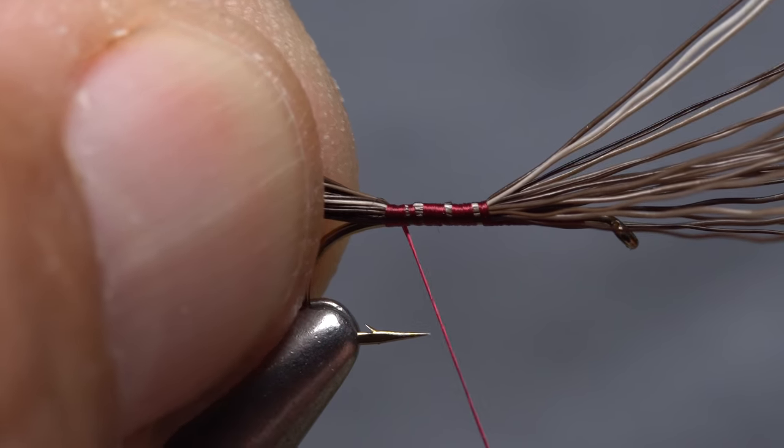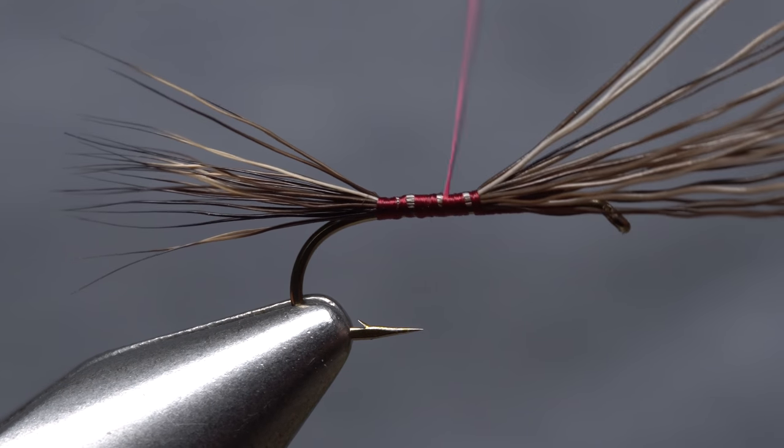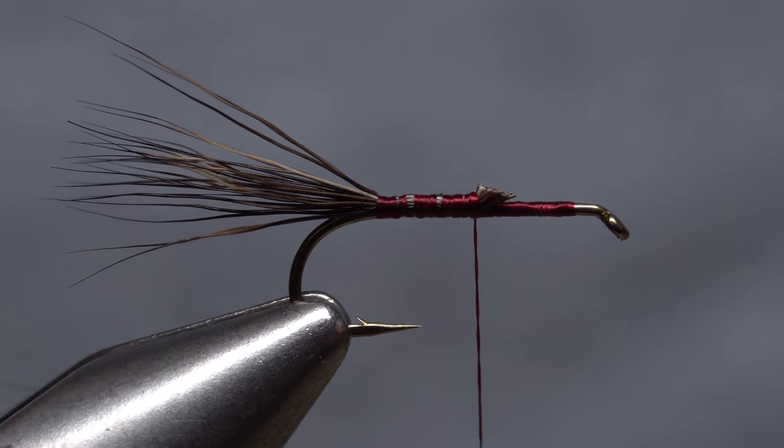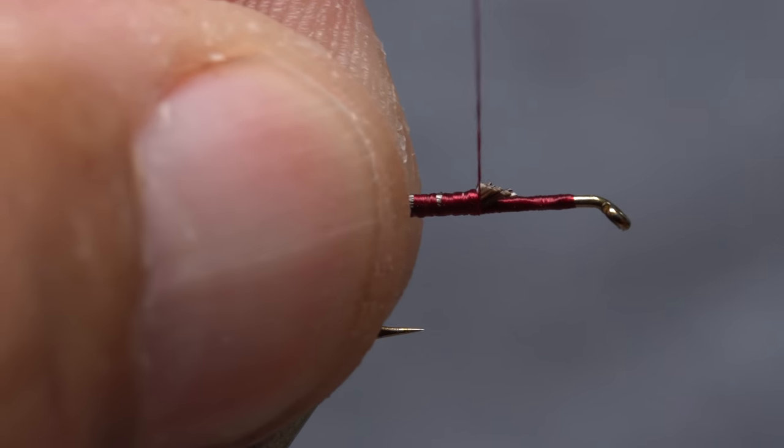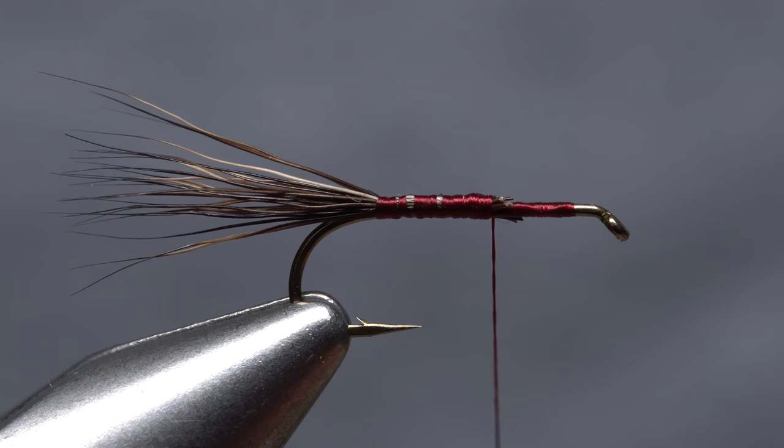It's okay, in fact preferable, if it flares just a little bit. Wrap forward with your tying thread up the hook shank to about its midway point, then pull the butt ends of the moose hair up and snip them off close. Take a few more wraps of tying thread to cover the butt ends, then leave the thread there at about the one-third point on the shank.